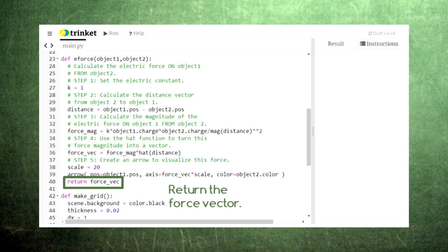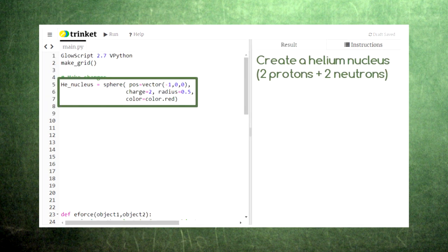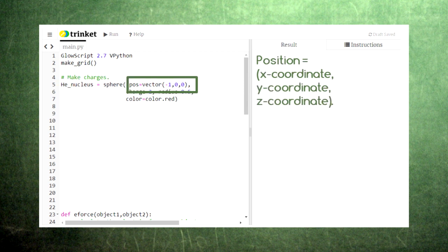Now that we have a set of instructions for creating these force vectors, let's make a helium nucleus and an electron. We can create these objects by using VPython's sphere command. Each of these spheres will need four pieces of information. First, we need to give the position of each sphere as a vector. VPython works in three dimensions, so this position vector needs an x-coordinate, a y-coordinate, and a z-coordinate in that order. We'll make all of our z-coordinates zero for now.